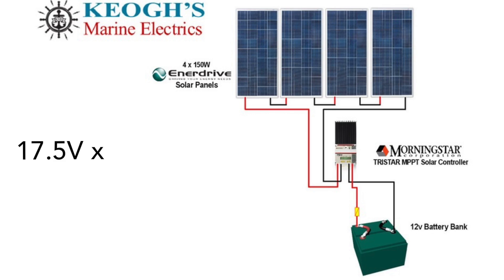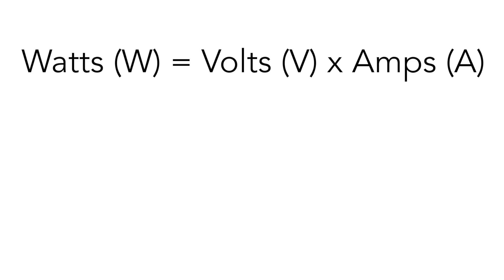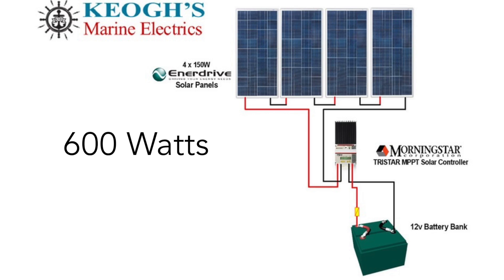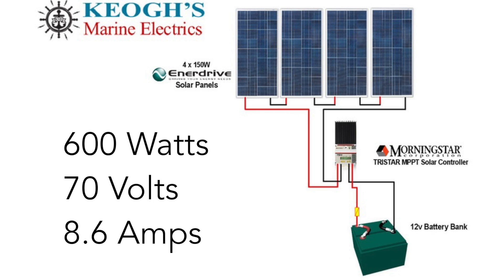What changes when you wire in series is the voltage of your system. When you wire things in series, the only thing that changes is the voltage. So wiring four 17.5 volt panels together, you take 17.5 volts and multiply by four, which gives you 70 volts. Now you have a 600 watt array at 70 volts. Using our equation — watts equals volts times amps — you have 600 watts and 70 volts, so you divide 600 by 70 to get 8.6 amps. So when wiring in series, the only thing that changes is your voltage: you have a 600 watt system at 70 volts and 8.6 amps.